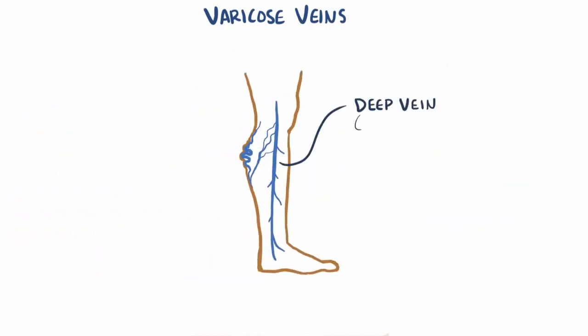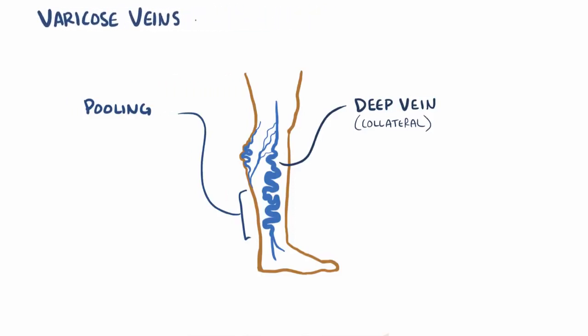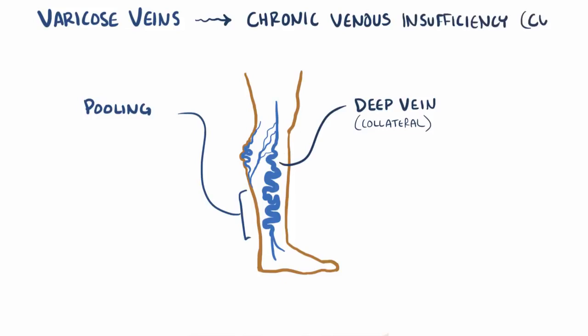The deep veins are acting as collateral veins and taking blood back. Over time those deep veins can be affected as well, resulting in even more pooling of blood in the gravity-dependent parts of the body. If this happens for prolonged periods of time, it progresses to what we call chronic venous insufficiency, or CVI.